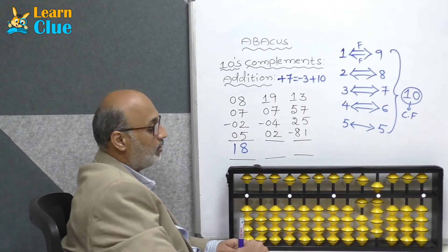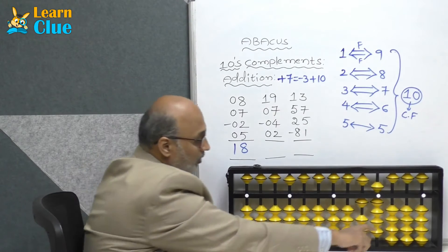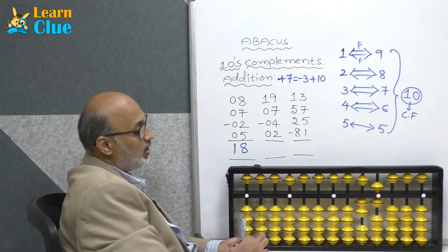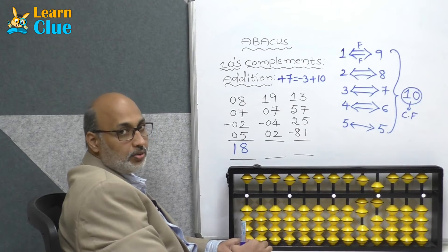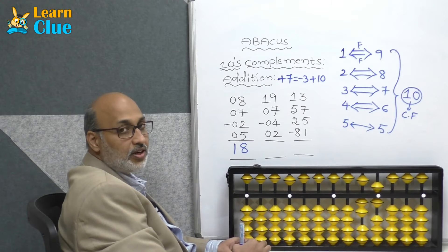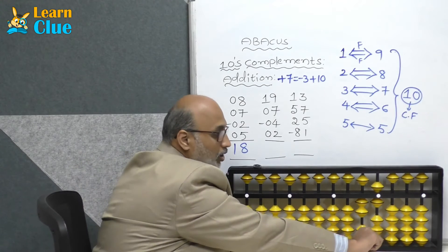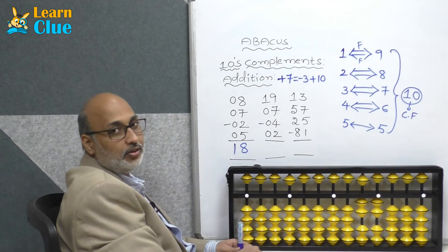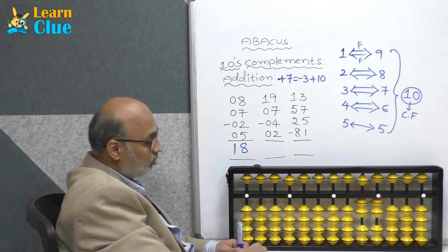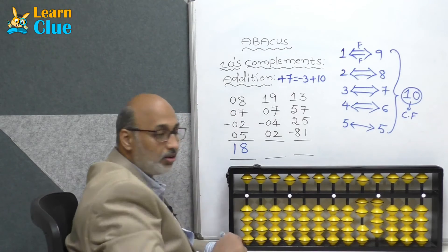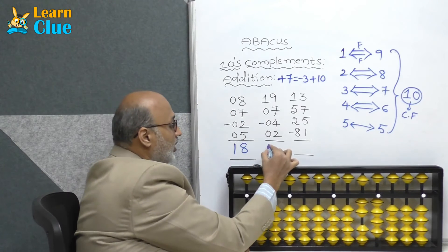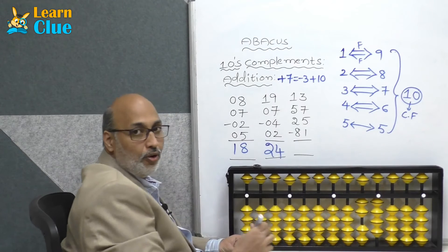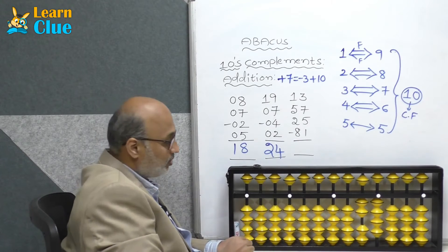Plus 7 — who is the friend of 7? 3. So minus 3 plus 10. Now they are asking minus 4. Let's try in 5s complements first. What is the technique of minus 4? Plus 1 minus 5. Now they are asking minus 3 plus 2, which is available. What is the answer? Answer is 24.